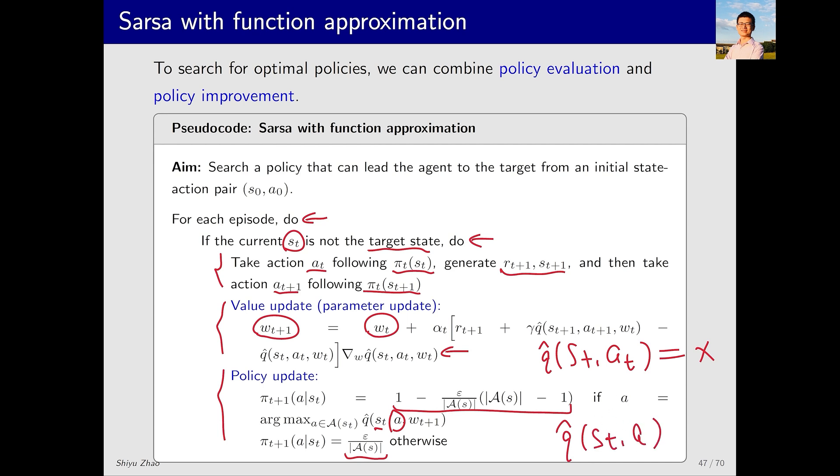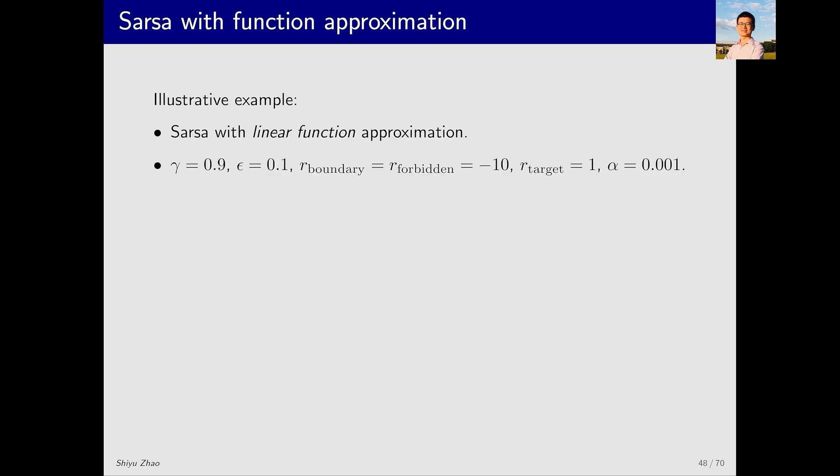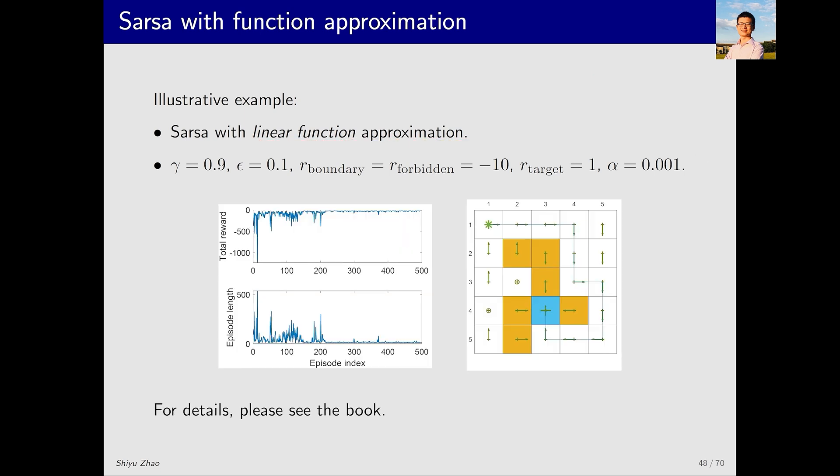Let's look at an example. This example combines SARSA with linear function approximation. The function Q hat equals phi transpose multiplied by a weight vector W. These are the parameters used in the simulation, and here are the simulation results.